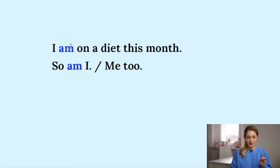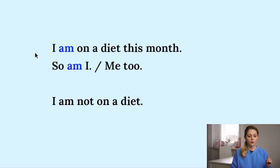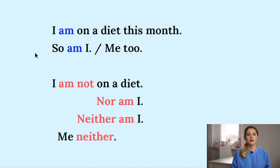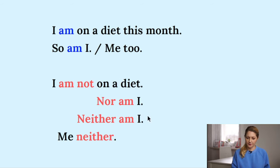We will start with easier ones like 'I am on a diet — so am I,' and gradually move to more difficult ones. For the negative, someone tells you 'I am not on a diet.' How can you agree? You say 'nor am I' or 'neither am I.' Or you can of course say 'me neither.' So: nor am I, neither am I. Me neither for negative, me too for positive.